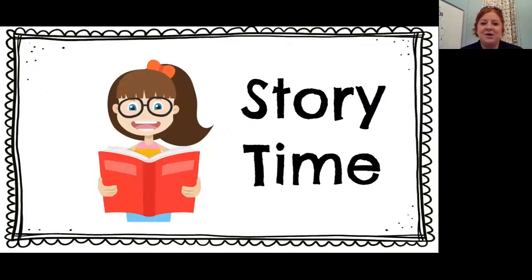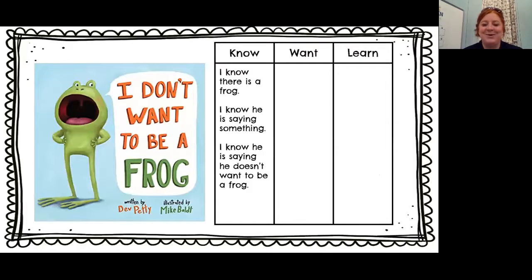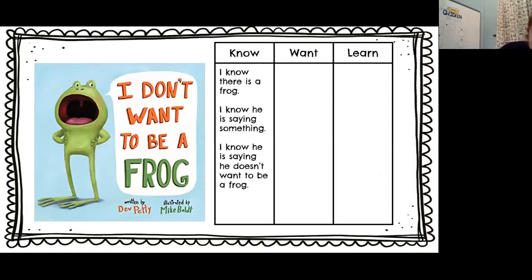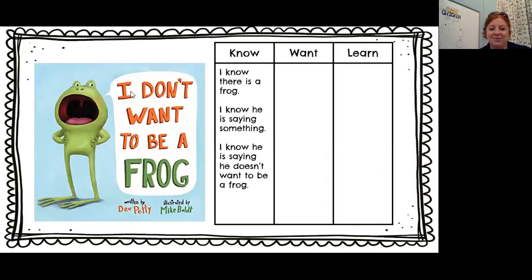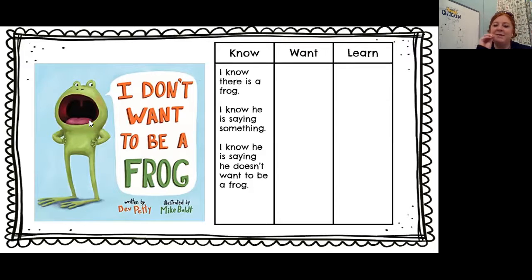I have one of my favorite books today to continue our learning on pond life and animals we find near the pond. Today's story is called 'I Don't Want to Be a Frog' and it is a really cute story. You can make a KWL chart at your house or join along with mine. Things that I know: I can see a frog on the cover, his mouth is open with a speech bubble, so I know he is talking and saying he doesn't want to be a frog. You can probably read some of those words because they are sight words.